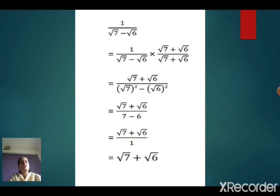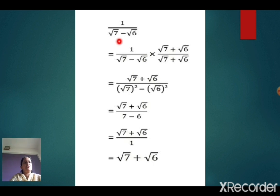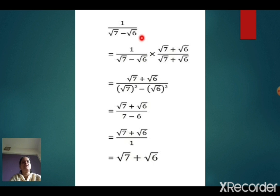The second one is a little bit different. It is 1 upon root 7 minus root 6. Children, look here — it is root 7 minus root 6 with a plus or minus sign. So you can't multiply numerator and denominator by root 7 or root 6 alone. For that, we have to multiply by the conjugate.